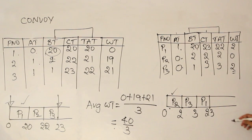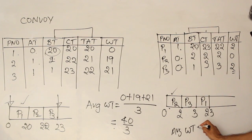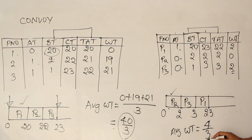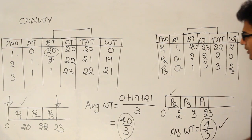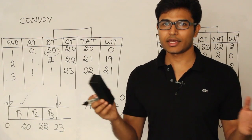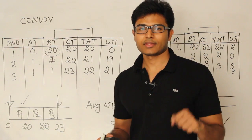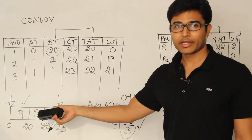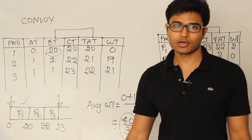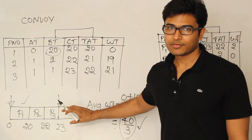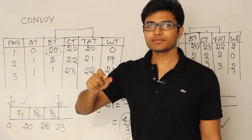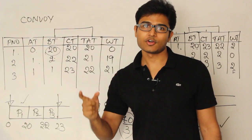The average waiting time in Case 2 is (2 + 0 + 2) / 3 = 4/3, compared to 40/3 in Case 1. This means processes are not waiting nearly as long. Whenever a process with a very high burst time arrives early, it blocks all other processes for a long time — this is the Convoy effect, and it is the disadvantage of FCFS. We will solve this by scheduling shorter jobs first, which is Shortest Job First.